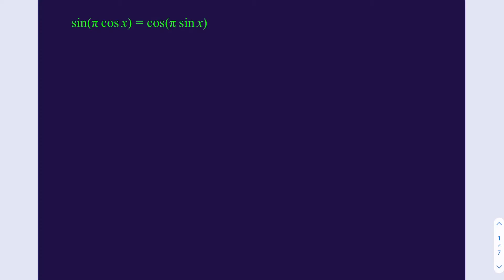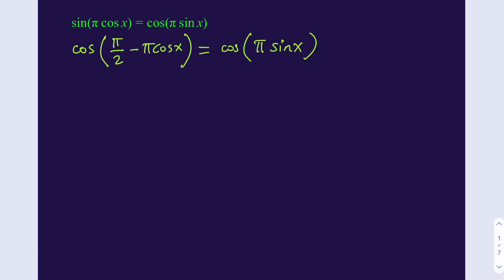So we have sine and cosine on different sides. Let's go ahead and write down the left-hand side as a cosine. Since the two angles that are complementary will have the sine equal to their cosines, I can write this as cosine of pi over 2 minus pi cosine x, which then equals cosine of pi sine x. Now we have cosine on both sides.